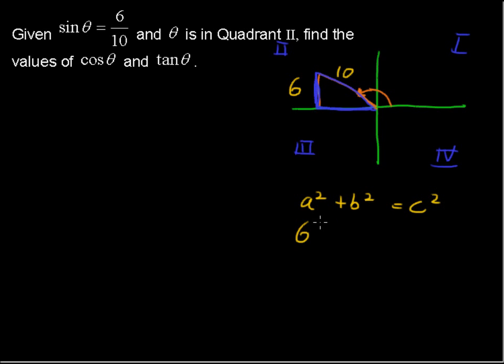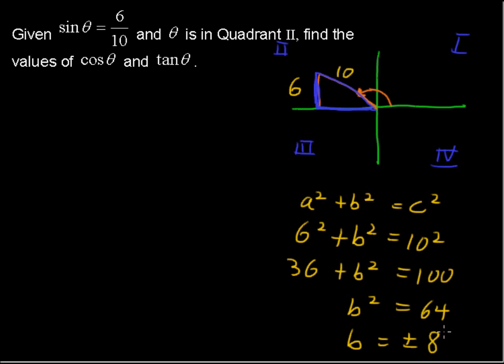And plug in, you've got 6 squared, right? The legs are a and b, and the hypotenuse is always c. So you've got 6 squared plus b squared equals 10 squared. Simplifying, you get 36 plus b squared equals 100. So b squared equals 64. That's after you subtract 36 from each side. And b equals plus or minus 8.